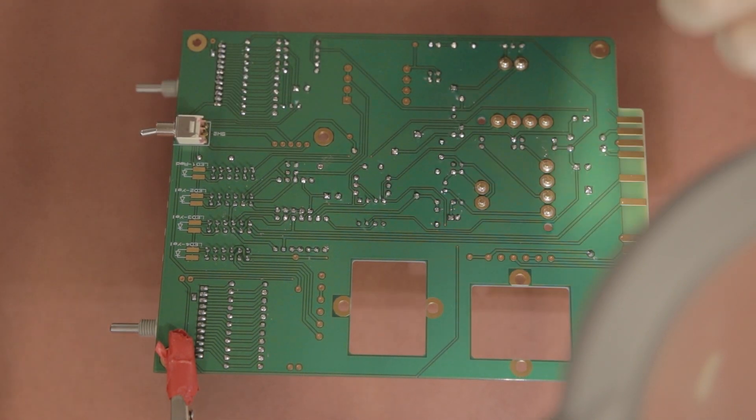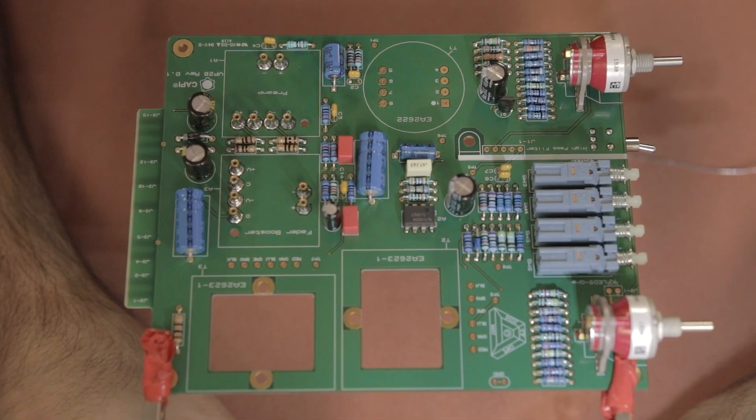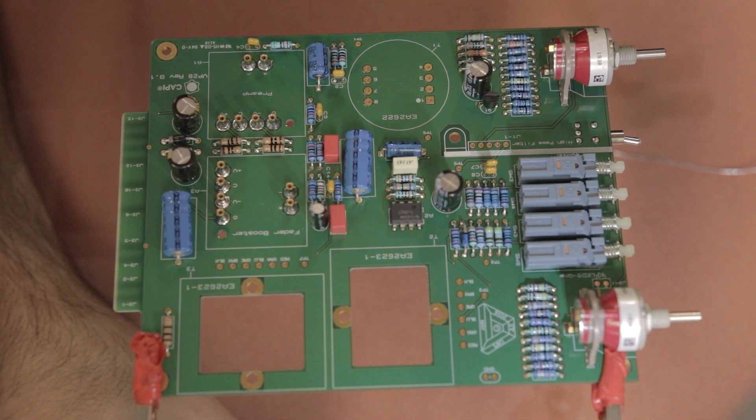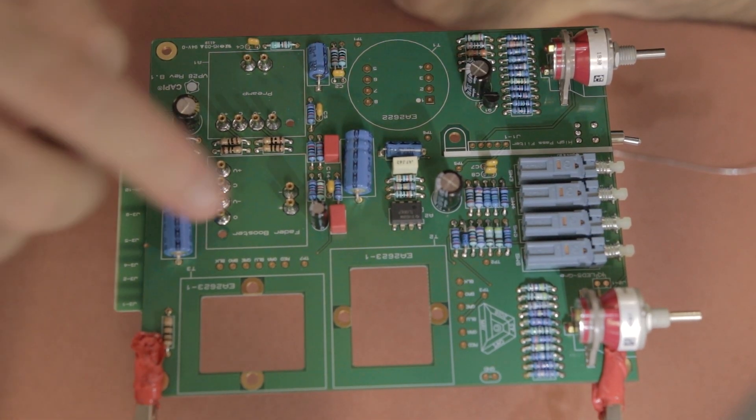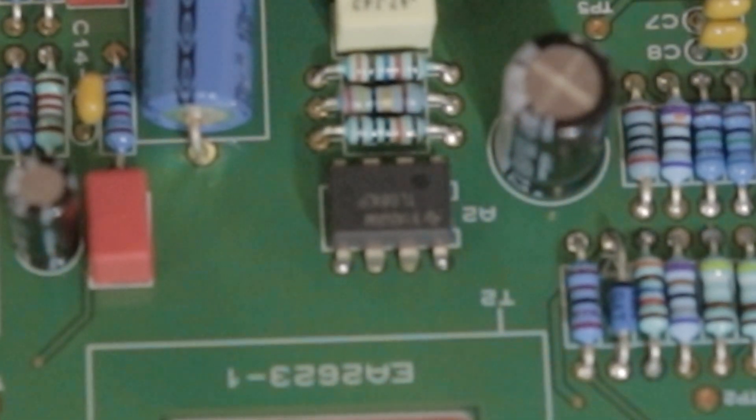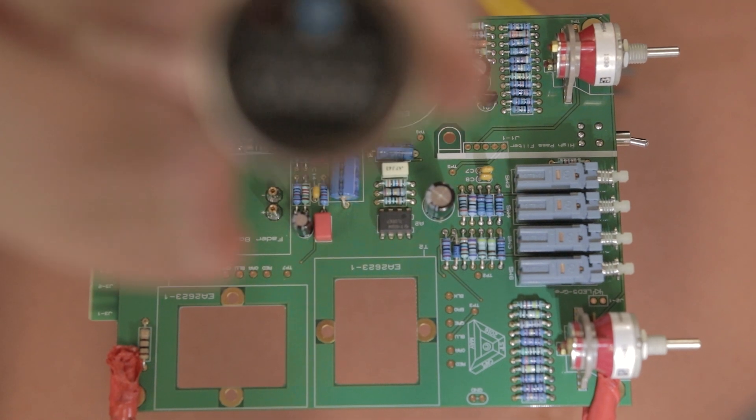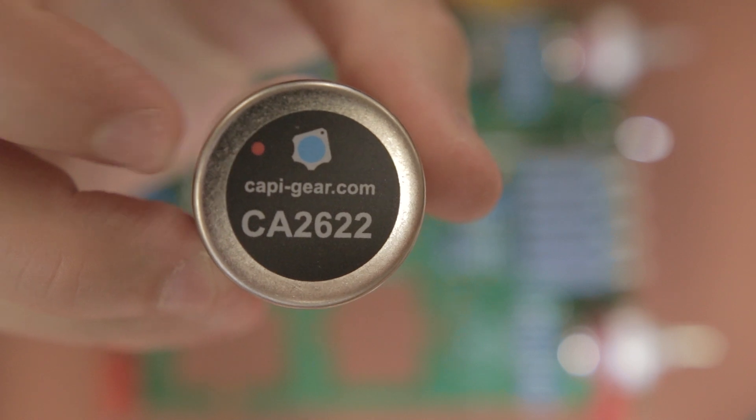As with all IC chips before you handle them you might want to make sure that you discharge any potential static. If you're wearing rubber shoes maybe take them off. Always with IC chips they'll have a dot that indicates the orientation, make sure that you align that correctly with the PCB as well.